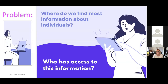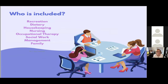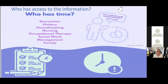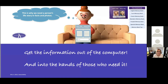Where do care partners and professionals keep information? Who has it and who has access? Does the whole team have information? If it's in a community computer, does all staff have access and time to get it? If you have the information, do you take time to share it with others? Probably not. So let's create a solution — memory books — so that the person with dementia will have the details of their life and those who care for them will have access too.